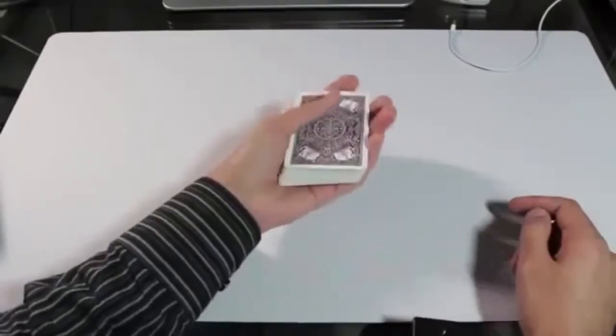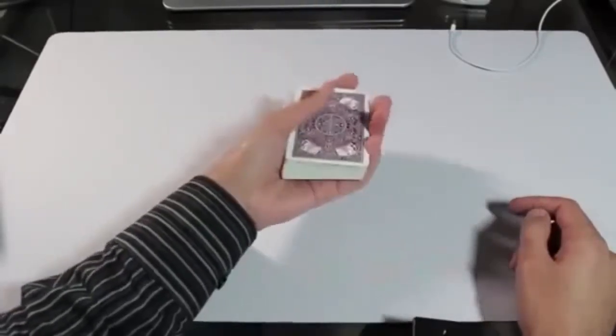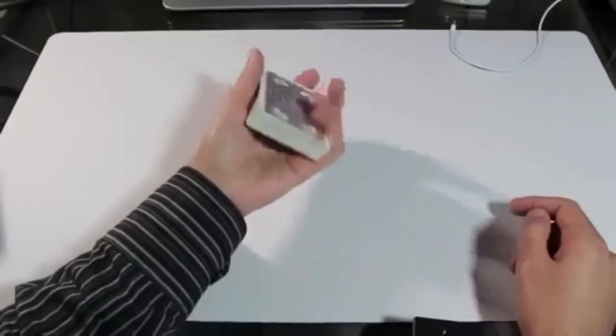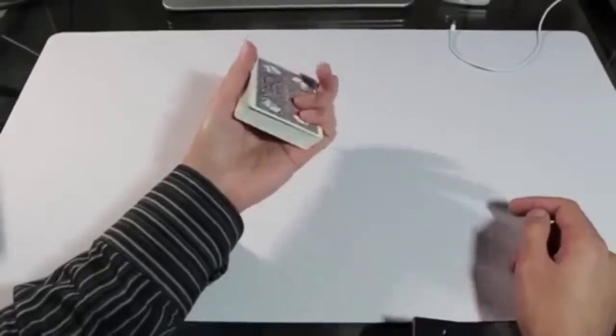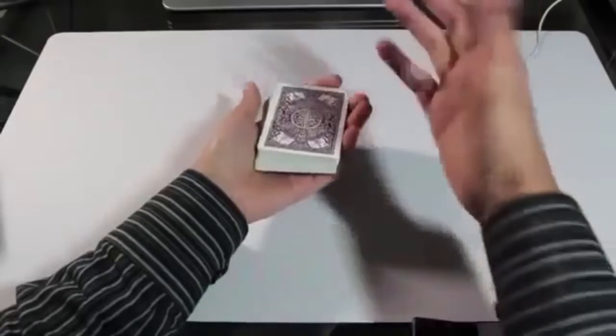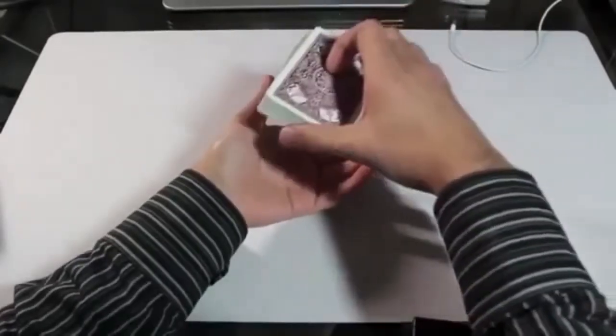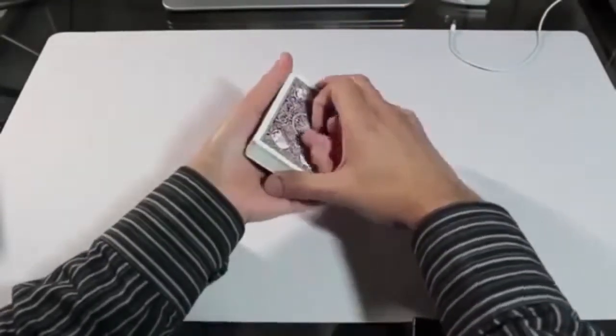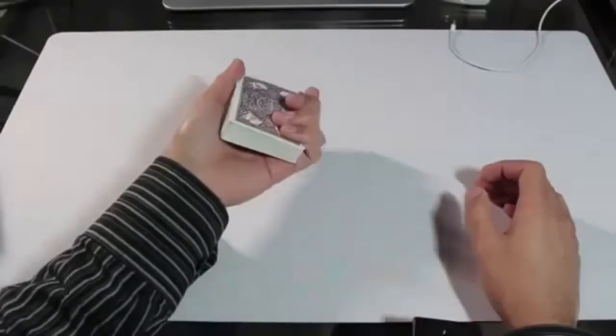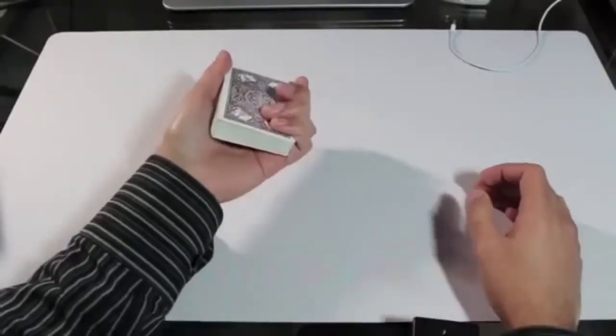And eventually you'll want to be able to get into that grip with just one hand. You'll want to be able to switch back and forth between these two grips whenever you want. For now if you're just starting, just grab the deck with your opposite hand and manually put it in that grip. And that will make it easier on you.